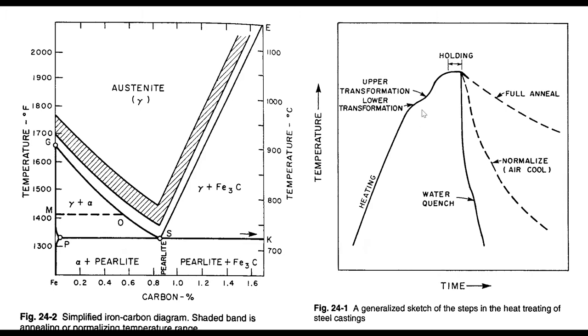When I heat treat, basically I heat it up. When I cross this line, I begin the transformation. When I cross this line, I finish the transformation. Then I go all the way up into this band and I hold it until all that carbide dissolves. You saw annealing as a furnace cool, normalizing I do with fans, and then water quenching goes really rapid.